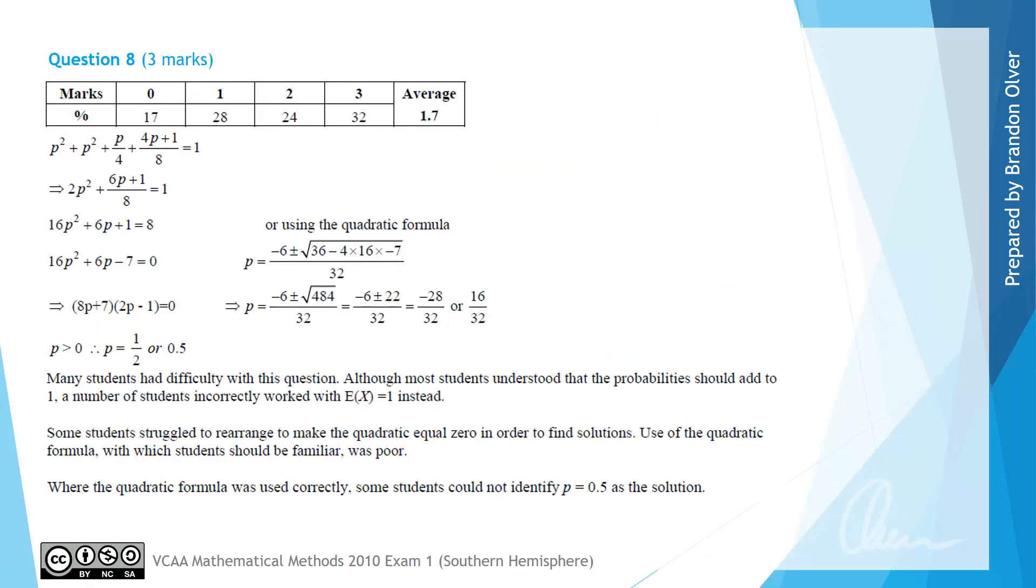From the examiner's report, we can see that a third of students got full marks for this, with a lot of students only getting 0 or 1 marks. You can see down here, this is the method of solving by factorizing, so it can be used to get the same p equals a half. Or we used the quadratic formula in the previous slide, which is what's also shown as another alternative in the examination advice.